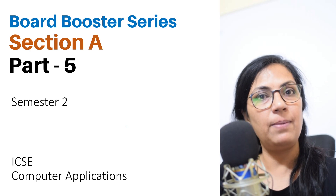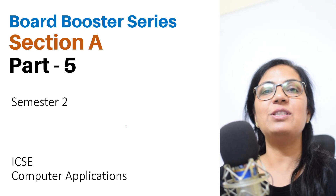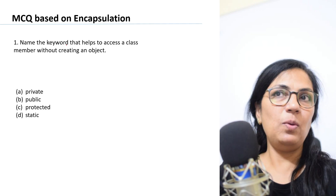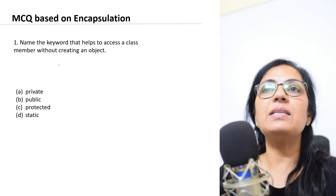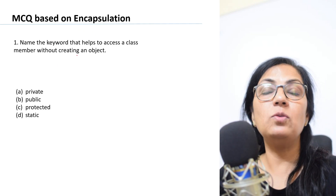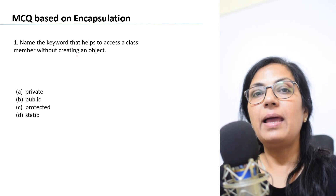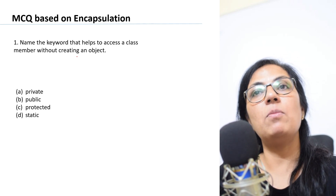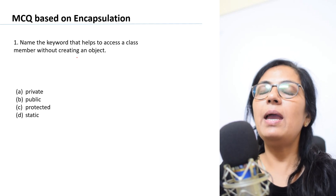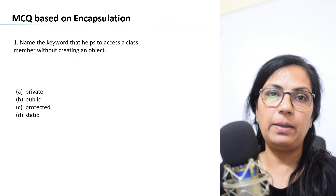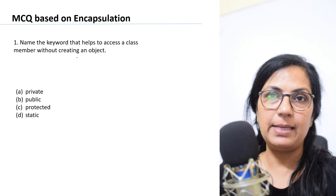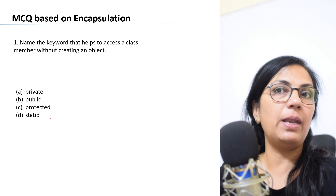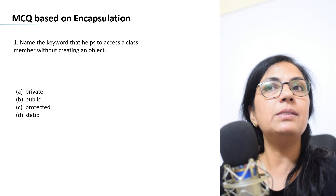Let's begin with our first question: Name the keyword that helps to access a class member without creating an object. That means we want to access a variable name or a member and we have not created the object for that particular class. Which keyword is that — private, public, protected, or static?